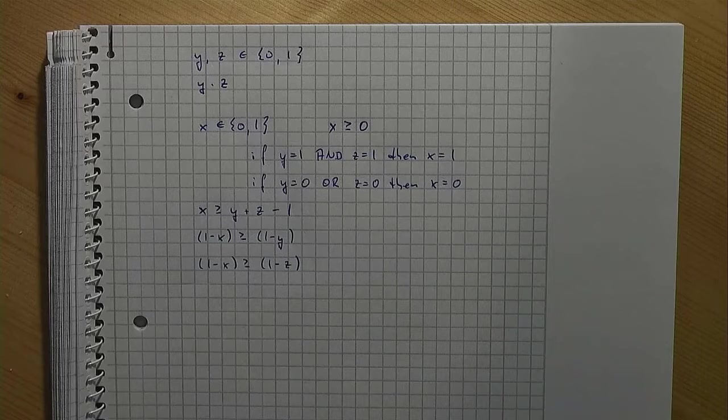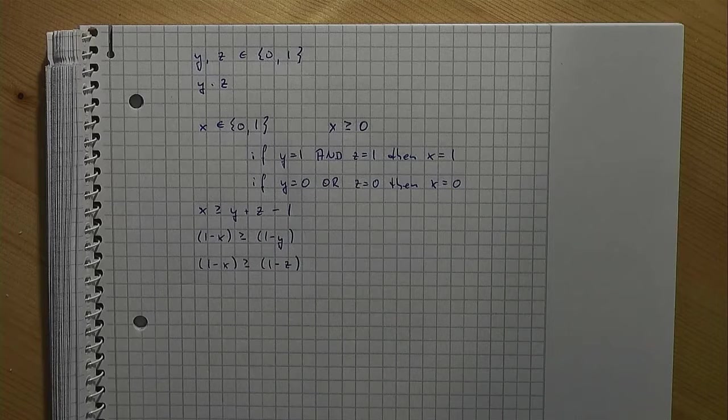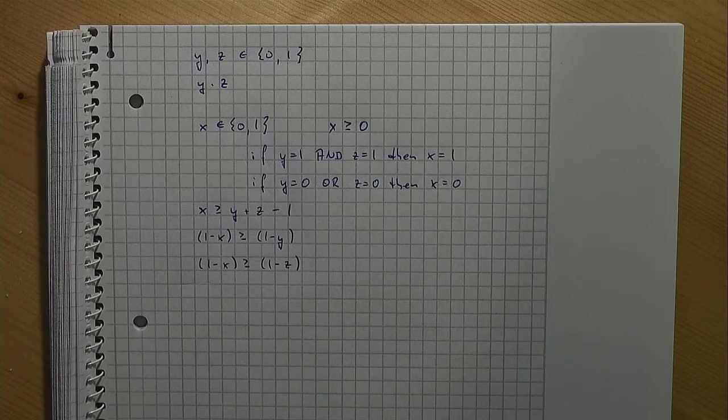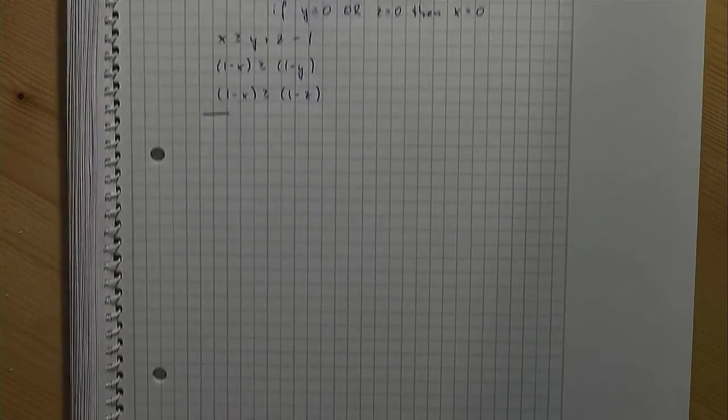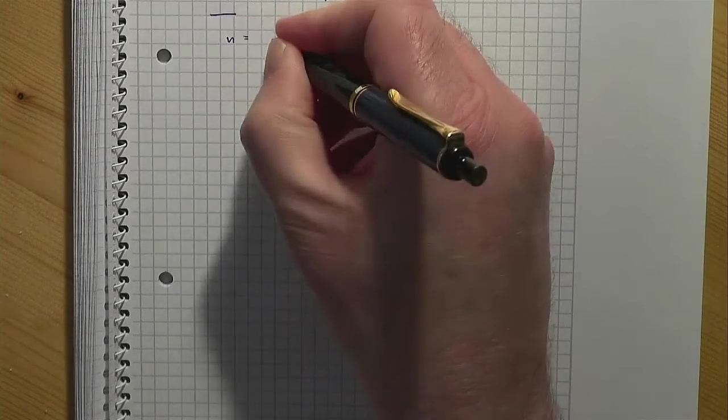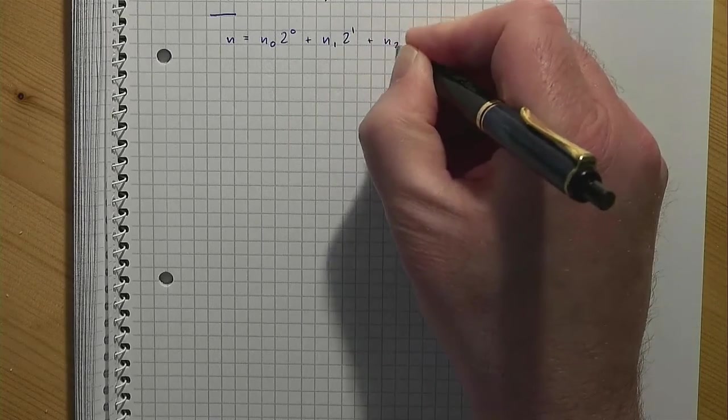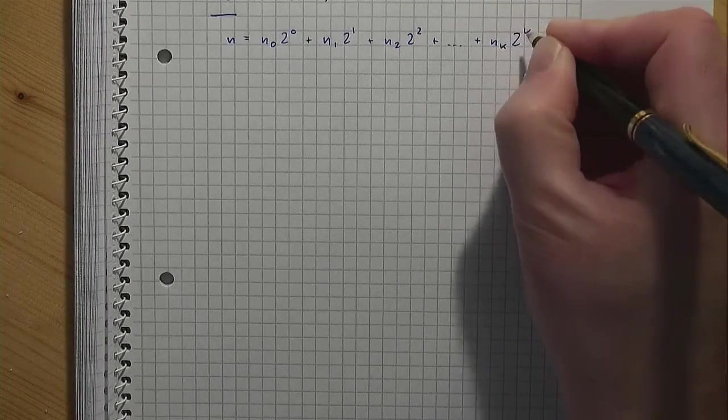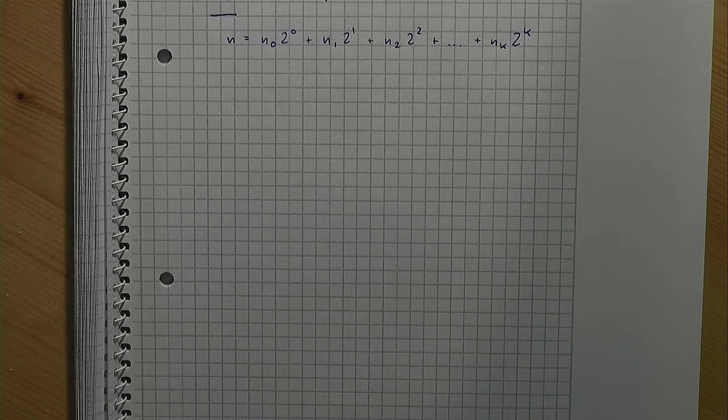Mentioning integers, it is sometimes a good idea to have integer decision variables with more than just two values being possible. For the time being, it might be interesting to note that every non-negative integer can be represented by powers of two in the following manner. N denotes a non-negative integer value and the ni's are unique numbers equal to 0 and 1. K is some large enough index.